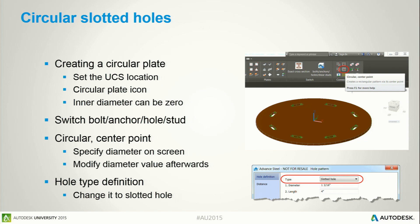Just to explain: in Advanced Steel you can create rectangular plates, polygonal plates, and there is a specific command to create a circular plate. It's really easy to define — you just enter the diameter, outside diameter, inside diameter, and thickness. If you want to create some bolts or holes, there is a switch for that. You can create them along a circle by entering the radius value. In the dialog it's easy to change the hole type — they can be circular or slotted. This is how you get slotted round holes on a circular plate.